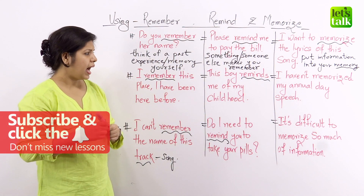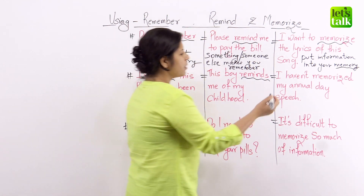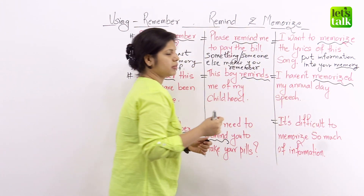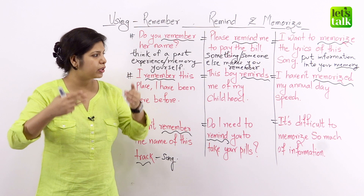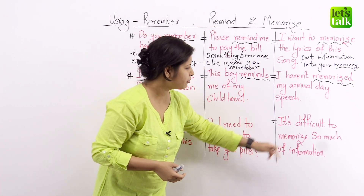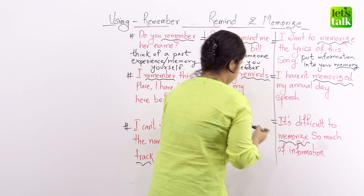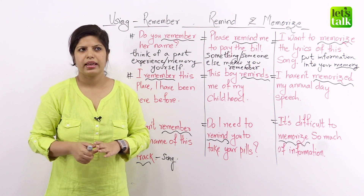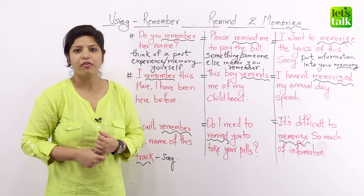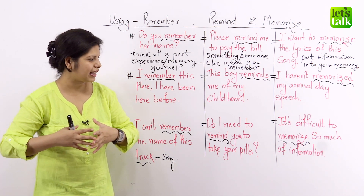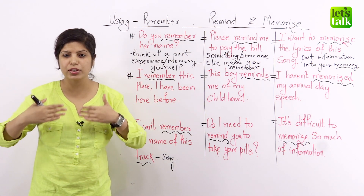The next one: I haven't memorized my annual day speech. I haven't already put the information into my head — I need to do it fast. I haven't learnt or put the details in. And finally: It's difficult to memorize so much information. If you're a student with an exam and you haven't been studying, you'll find it very difficult to memorize everything. So memorize means the same thing — to basically put some information into your memory, to learn something.